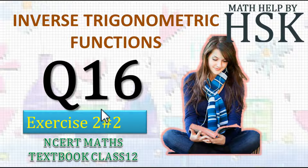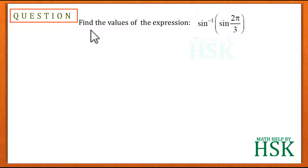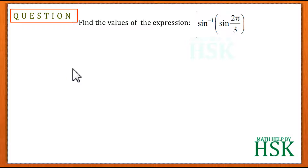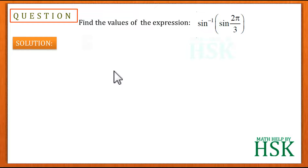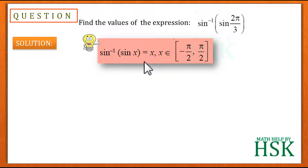Taking question number 16 of exercise 2.2 of the chapter Inverse Trigonometric Functions. The question is: find the value of sin⁻¹(sin(2π/3)). To solve this, we should know the result: sin⁻¹(sin(x)) = x, if x belongs to the closed interval [-π/2, π/2].